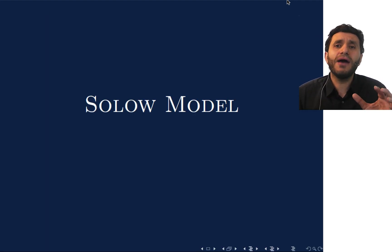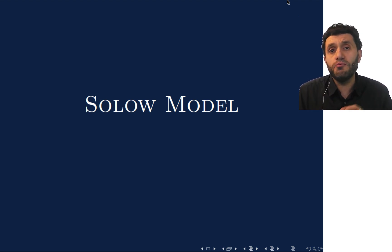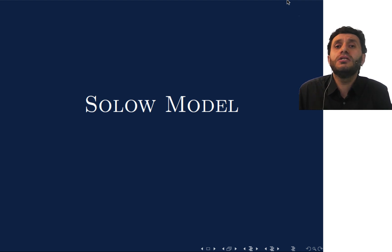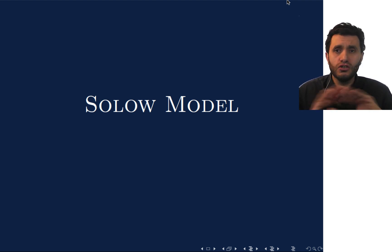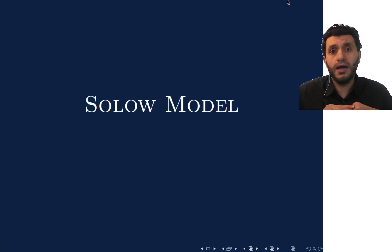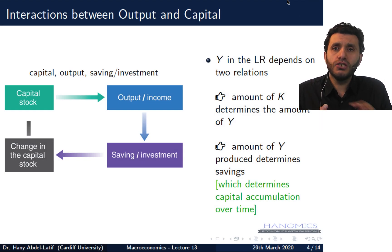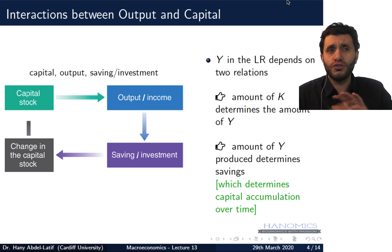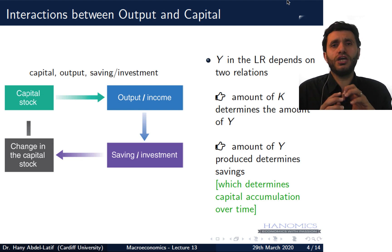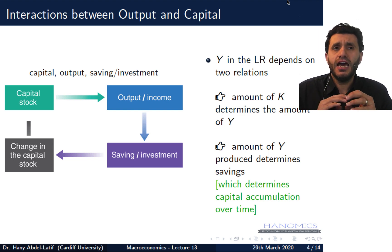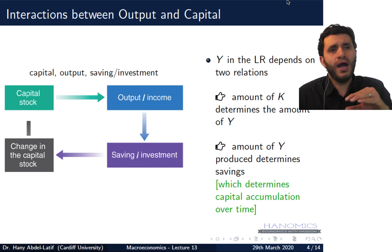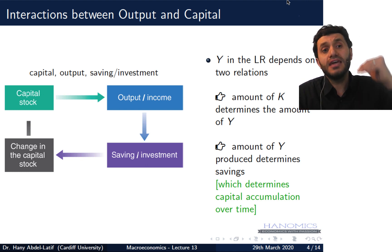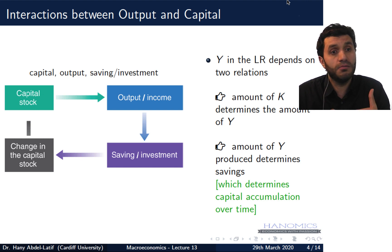Next we'll look at one of the very important growth models built on what we just discussed, examining the production function to see what determines economic growth. For now, we assume there is no technological progress and no change in population size. Let's look at the interaction of capital accumulation. Output in the long run depends on two relations: the amount of capital determines the amount of output, and the amount of output determines savings, which in turn determines capital accumulation over time.